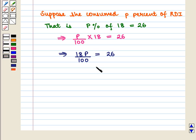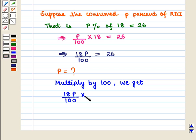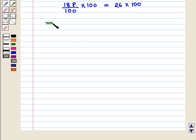Now we have to solve this equation for P. We multiply by 100 on both sides, and we get 18P/100 × 100 = 26 × 100. This implies that 18P = 2600.